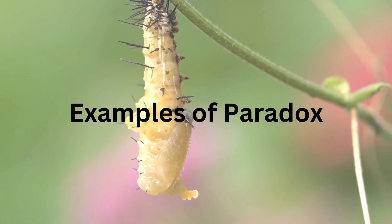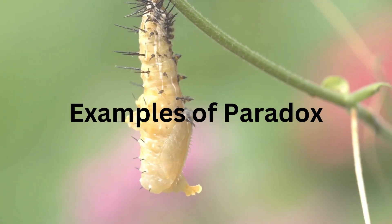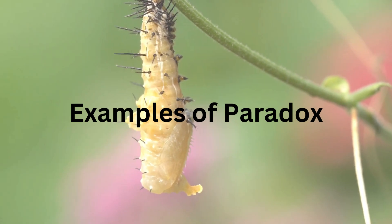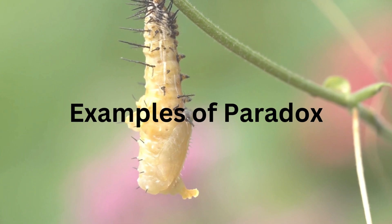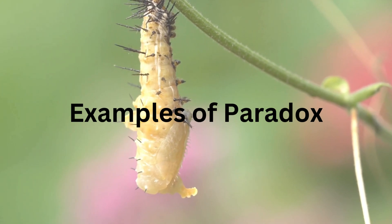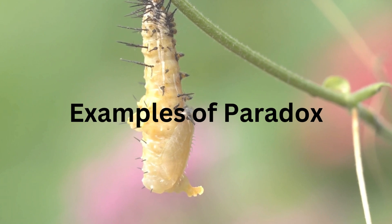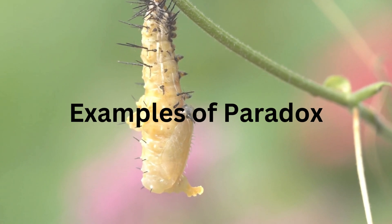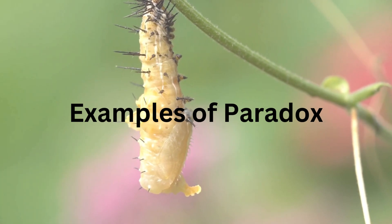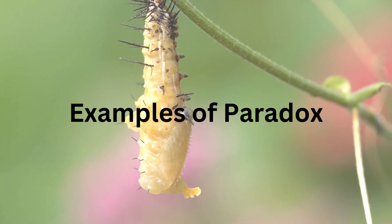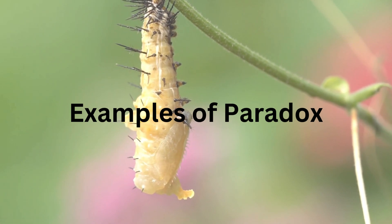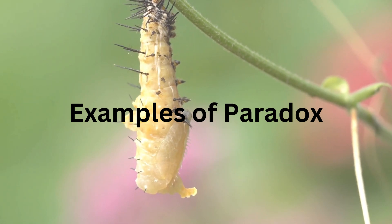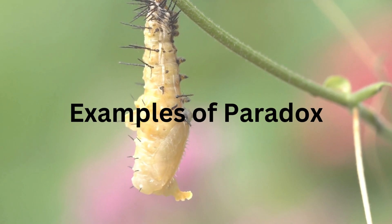Another classic example can be found in Franz Kafka's The Metamorphosis, where the protagonist Gregor Samsa wakes up one morning to find himself transformed into a giant insect. This surreal and absurd situation embodies a paradox of identity — how one's outward appearance can mask a deeper truth about one's inner self. As Gregor grapples with his transformation and the reactions of those around him, Kafka explores themes of alienation, isolation, and a search for meaning in a world that often defies logic and understanding. Through Gregor's plight, readers are invited to confront the paradoxes of human existence and the complexities of self-discovery.